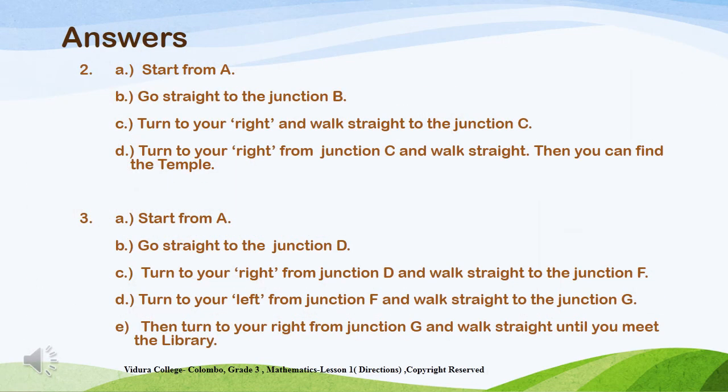Now let's check the answers. You can compare your answers with the teacher's answer. Question number 2: How do you go to the temple starting from A? First, start from A. Then go straight to Junction B. Turn to your right and walk straight to Junction C. Turn to your right from Junction C and walk straight. Then you can find the temple.